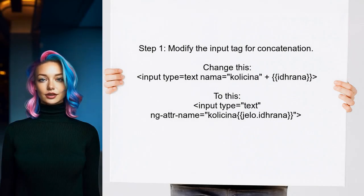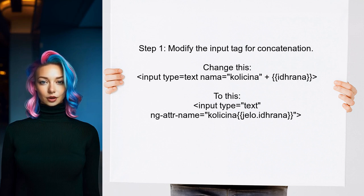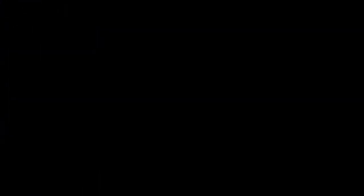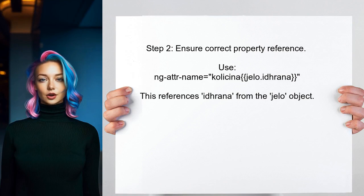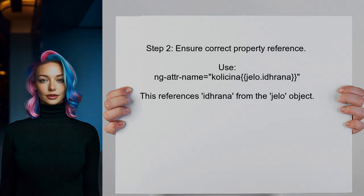To concatenate a string in an HTML attribute using Angular, the user should start by modifying the input tag in their HTML code. Instead of using the plus sign directly in the attribute, they should use Angular's binding syntax. Next, the user should ensure that the property they want to concatenate — in this case, 'idrana' — is correctly referenced from the 'jello' object.